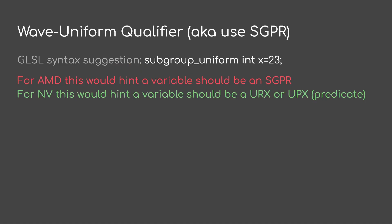Second suggestion: wave uniform qualifier, aka use the scalar GPRs. GLSL syntax would be like subgroup_uniform put before a variable. That would tell the compiler you want an SGPR on AMD, and on Nvidia this would be a URX or a UPX if it's a predicate.